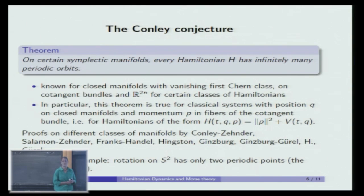Including the examples from classical mechanics, all Hamiltonians of this form H(t,q,p) = ||p||^2 + V(t,q) on cotangent bundles are included in that case and we know we always get infinitely many periodic orbits, which includes constant solutions. The proofs for different classes of symplectic manifolds have been by many people; this list is far from being complete. But the most important steps were by Conley-Zehnder, Salamon-Zehnder, then Franks-Handel, then Hingston, Ginzburg, Ginzburg and Gurel, myself and just Gurel.